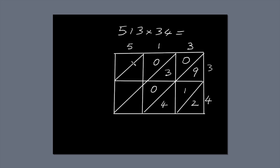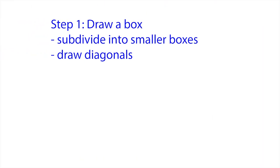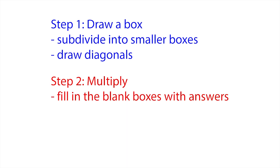Now, let's do the final column. 5 times 3 is 15. 5 times 4 is 20. Done. That's step 2. Multiply and fill in the blanks with your answers.